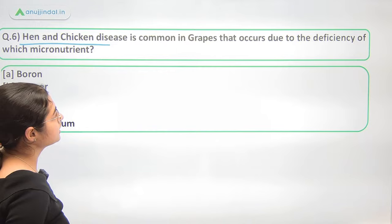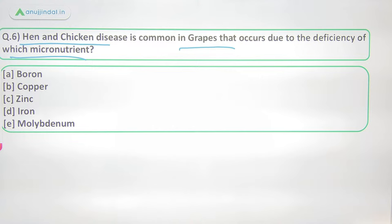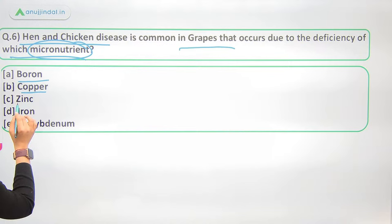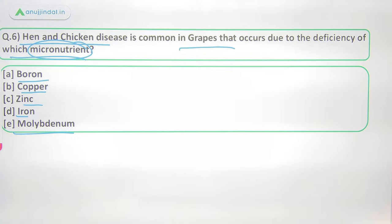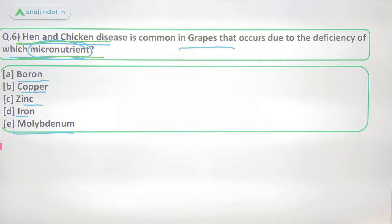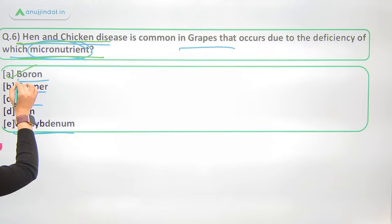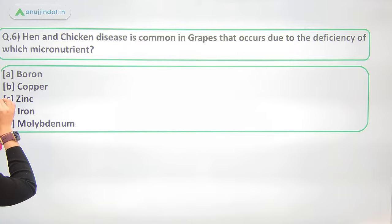Question 6: Hen and chicken disease in grapes is due to deficiency of which micronutrient? Options: boron, copper, zinc, iron, or molybdenum. Hen and chicken disorder is caused by boron deficiency — option A.